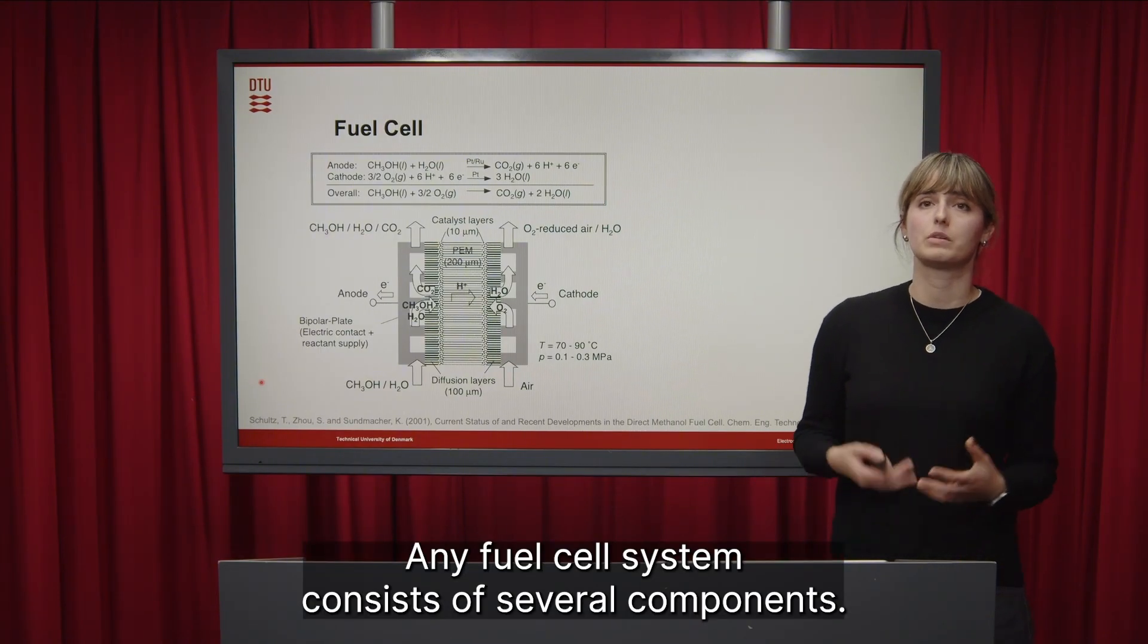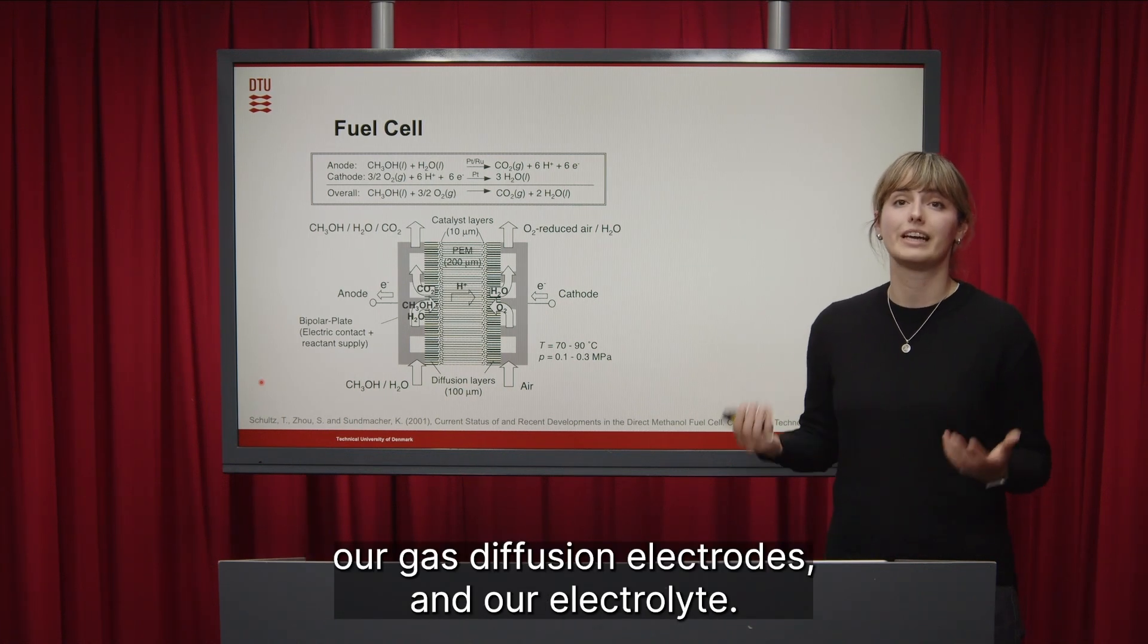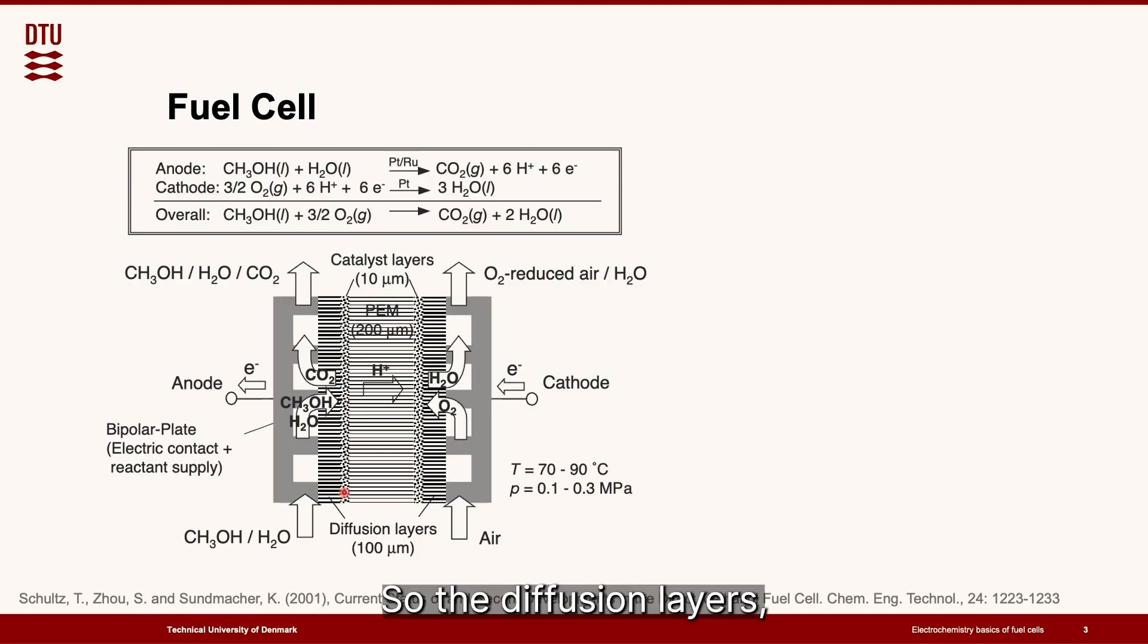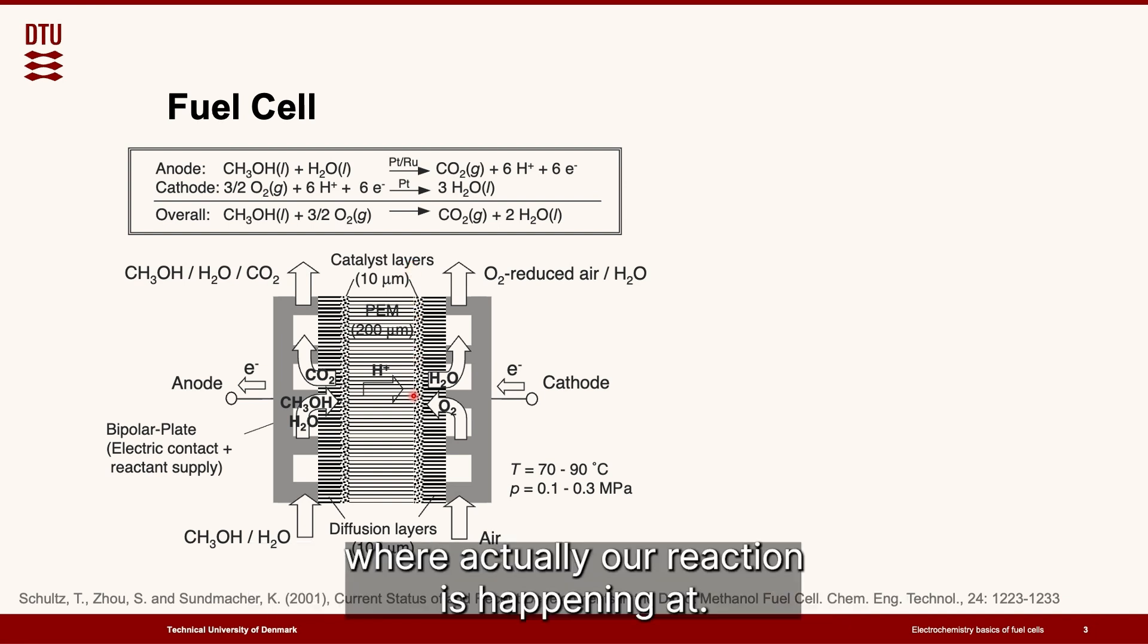Any fuel cell system consists of several components, those components being bipolar plates, our gas diffusion electrodes, and our electrolyte. The diffusion layers are typically covered in a catalyst forming a catalyst layer where actually our reaction is happening at.